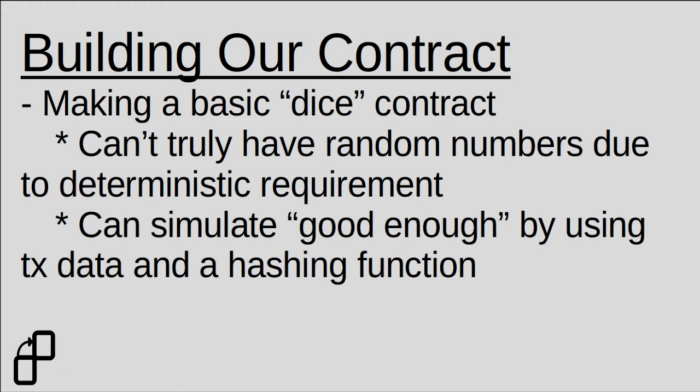So how can we actually roll a dice on the Ethereum network? This is actually kind of an interesting problem compared to traditional programming languages. We can't have truly random numbers in Ethereum smart contract code like we could with C, C++, or Python. And again, this is because of the requirement that code is deterministic on the Ethereum network. When one node runs the smart contract function, all the other nodes have to get the exact same return value, same state change, and same outcome as the other nodes.